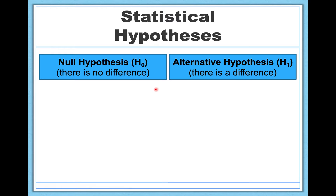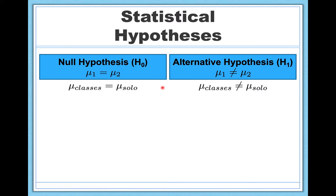Let's state our statistical hypotheses. The null hypothesis states there's no effect — no difference between the two groups: people who work out together and people who work out alone. Symbolically, the mean of group one equals the mean of group two. The mean anxiety level of people who work out in groups will be the same as the average anxiety level of people who work out alone — a symbolic way of saying no difference.